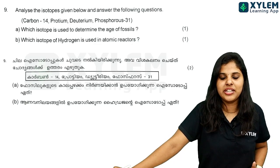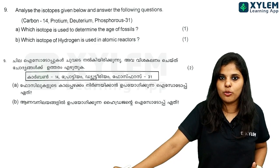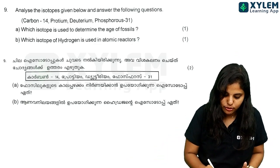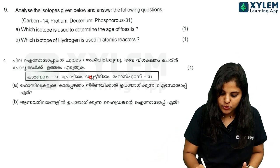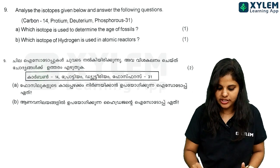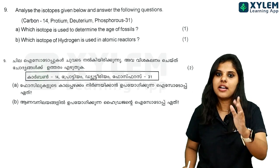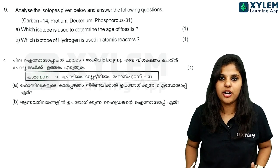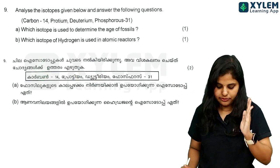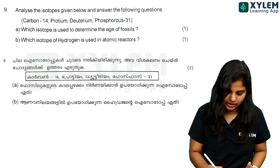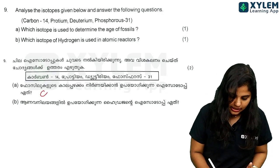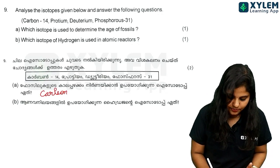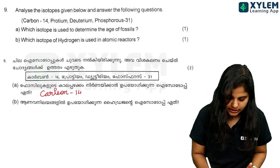What is the isotope? Carbon-14, Protein, Deuterium, Phosphorus. What is the carbon isotope? Carbon-14. What is carbon-14? Carbon-14.